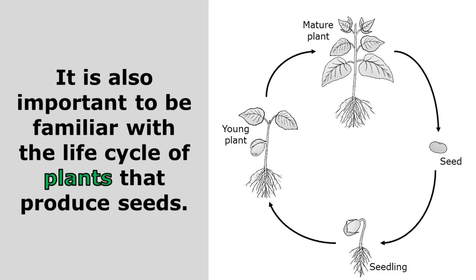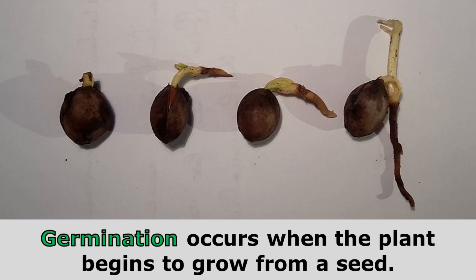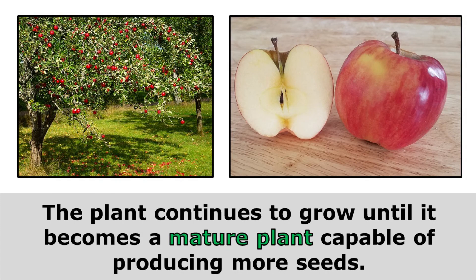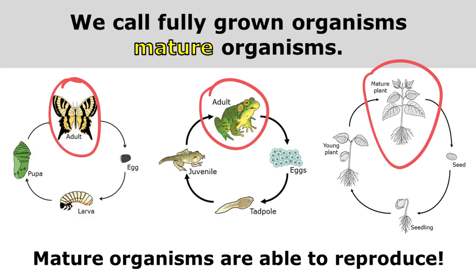It's also important to be familiar with the life cycle of plants that produce seeds. Mature plants produce seeds, and you can see the seeds inside this tomato. Germination occurs when the plant begins to grow from a seed — as soon as the seed begins to grow, we say it has germinated. Once the plant develops leaves, we call it a seedling. The plant continues to grow until it becomes a mature plant capable of producing more seeds. We call fully grown organisms mature organisms, and mature organisms are able to reproduce.